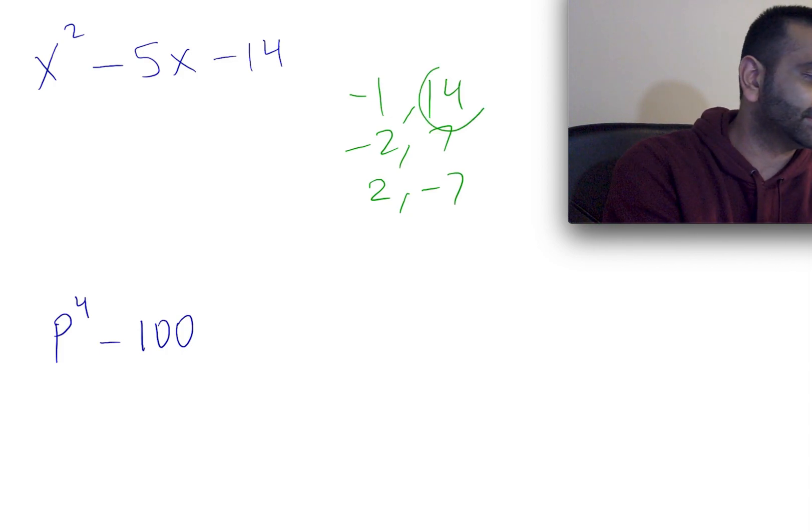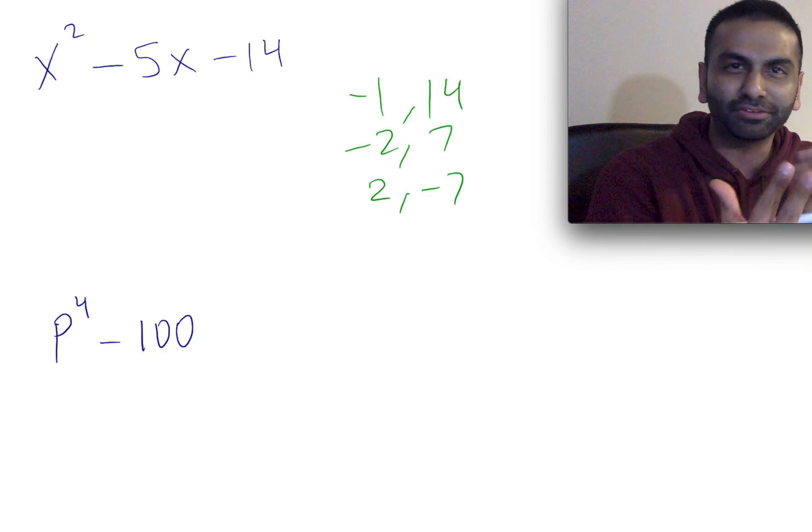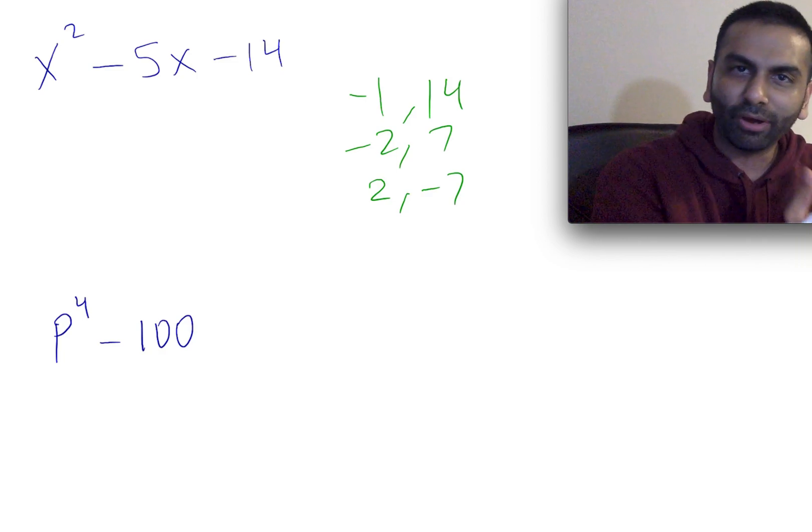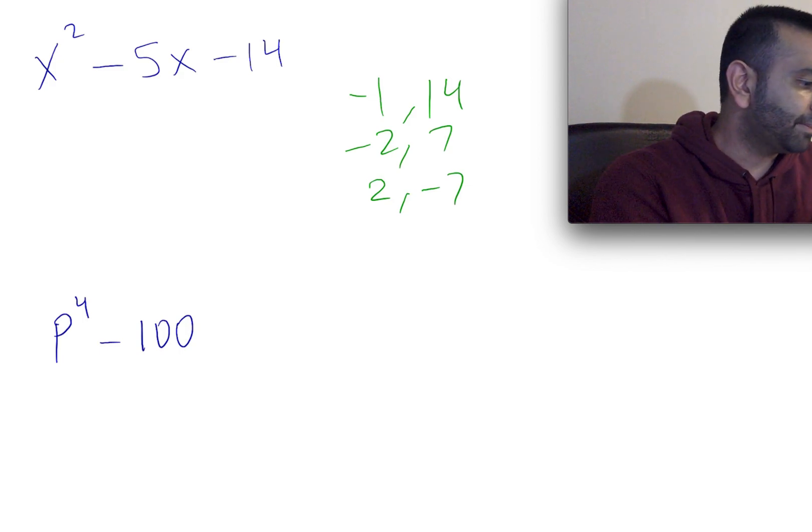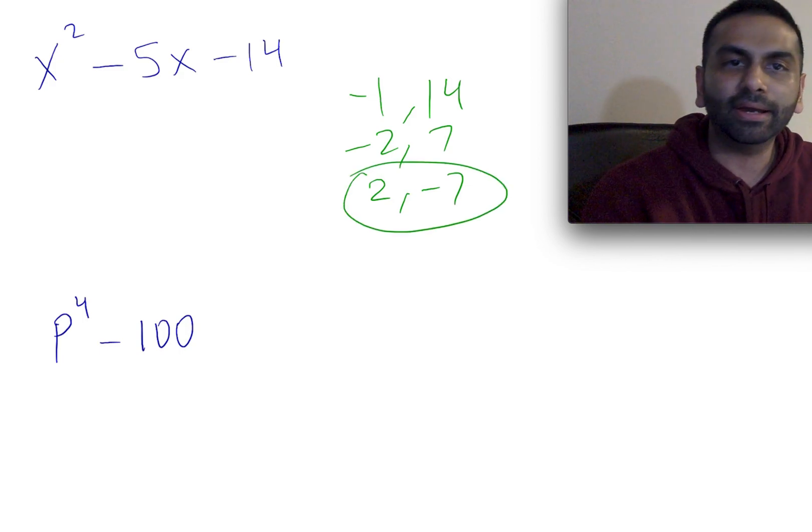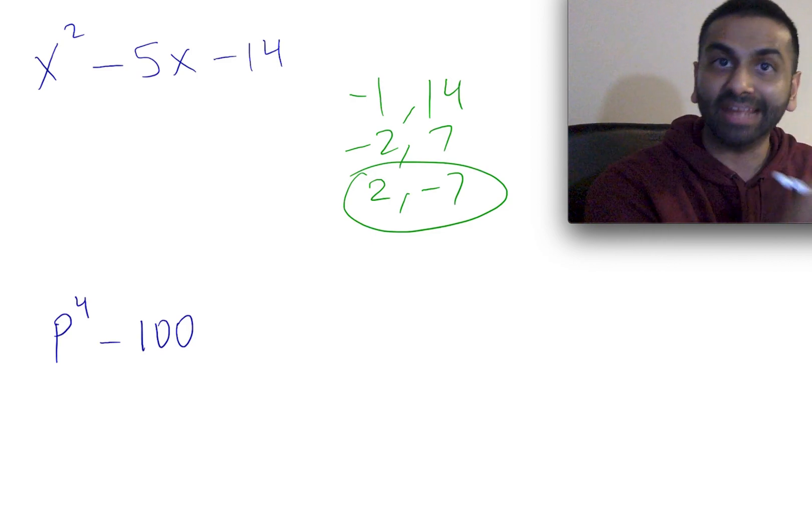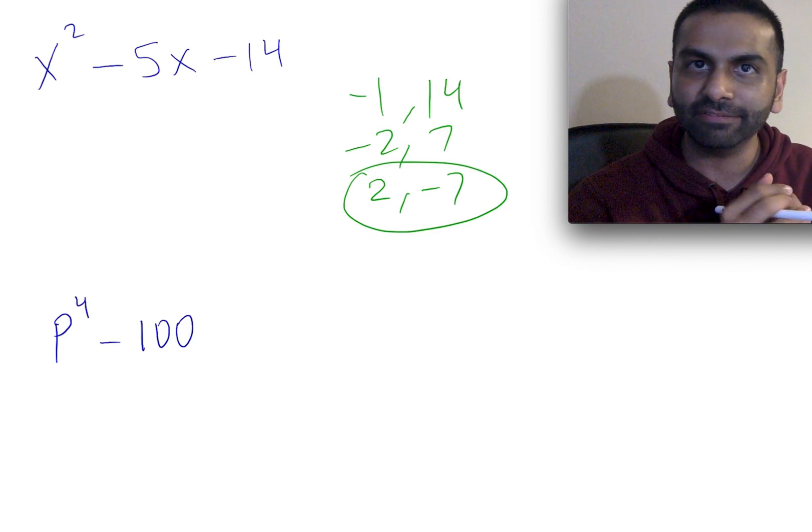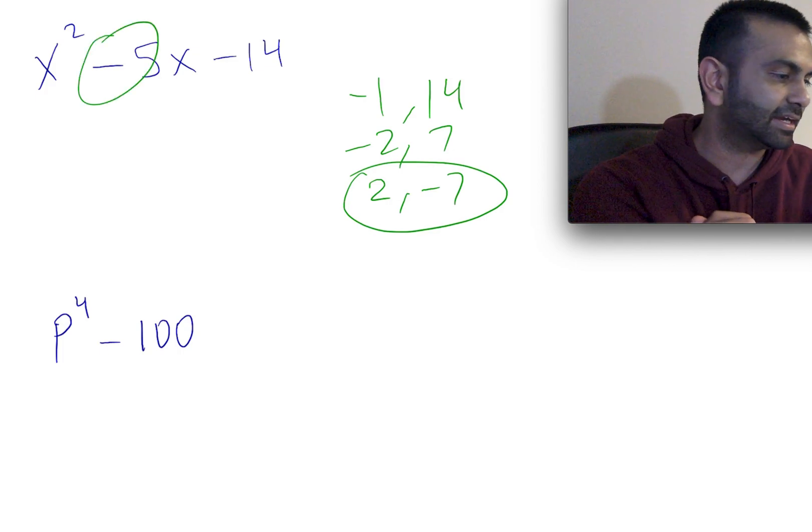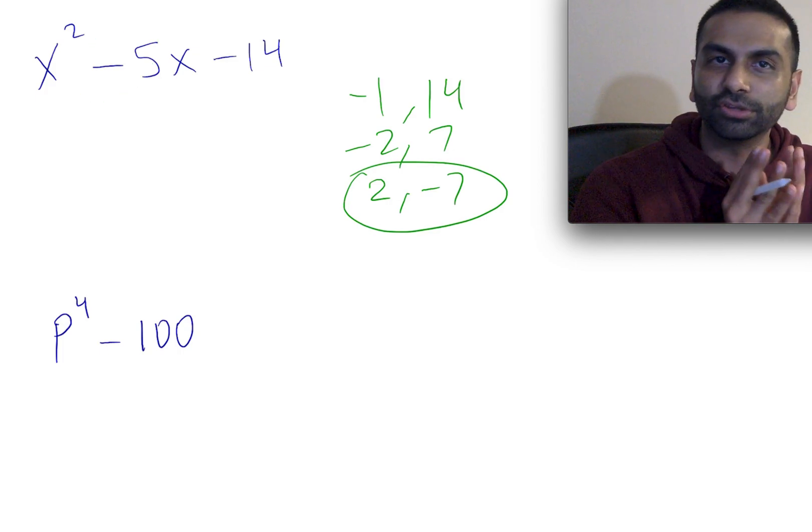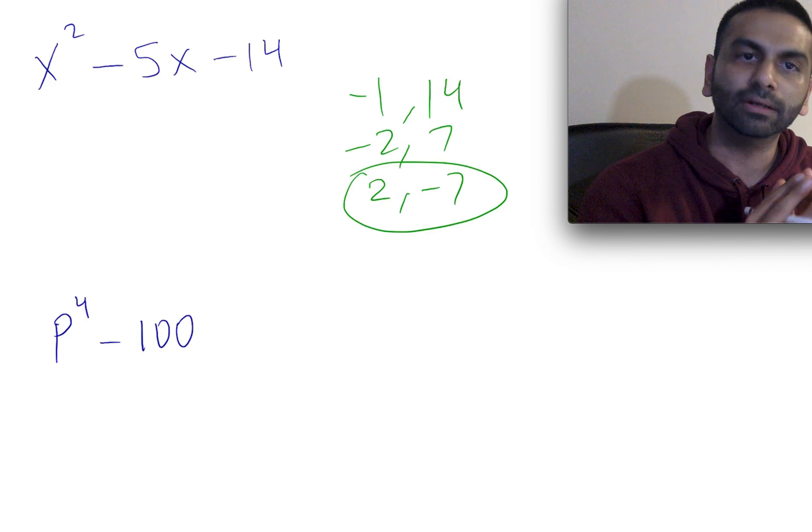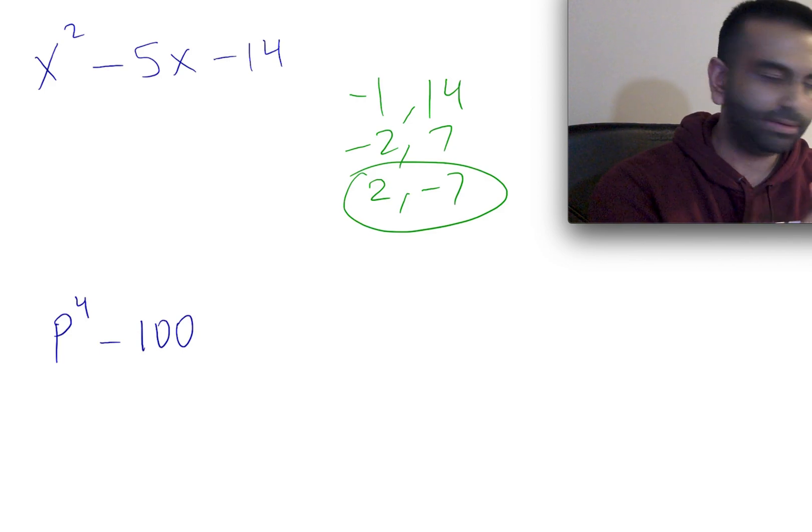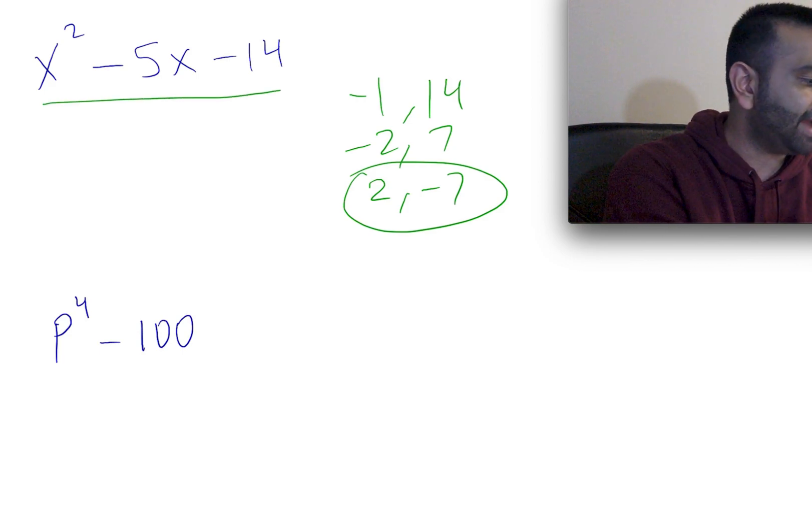With 14, the only factors are 2, 7, and 1, 14, and positive negative versions of it. Pretty quickly, we found it. These two, 2 and negative 7, add up. 2 plus negative 7 is negative 5, and they add up to give us negative 5 like we wanted. So the two numbers we were looking for were 2 and negative 7, which means this whole thing can factor.